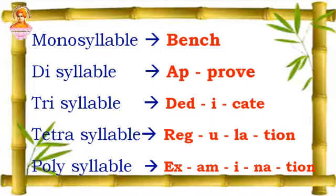Then, trisyllable. A word that has three syllables in it is a trisyllable word. Example: dedicate. I am pronouncing it as ded-i-cate. I can hear E, I, A. So dedicate is a three-syllabic word.